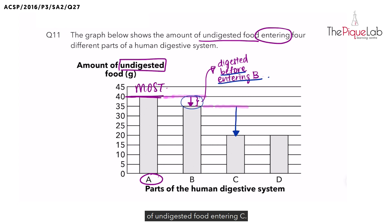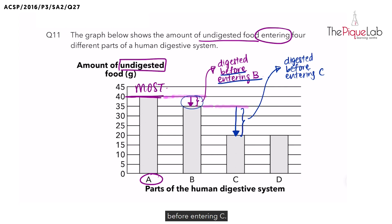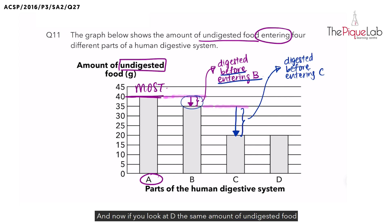Likewise, if you look at C, there is a much lower amount of undigested food entering C. So again, what has happened to this amount of undigested food? Yes, it has been digested before entering part C, and once again this indicates digestion happened before entering C.